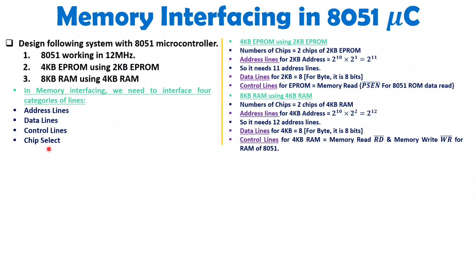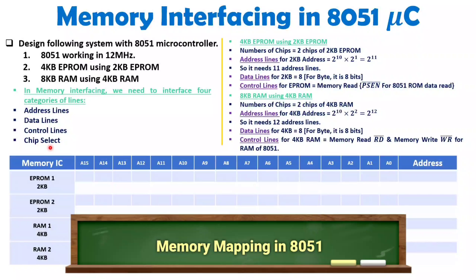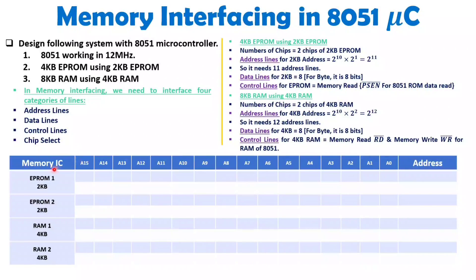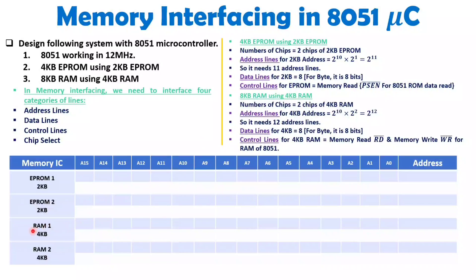To understand chip select, you need to understand memory mapping. 8051 has 16 address lines, A0 to A15. We have 2 chips of EPROM — EPROM1 and EPROM2, each 2KB — and 2 chips of RAM — RAM1 and RAM2, each 4KB.